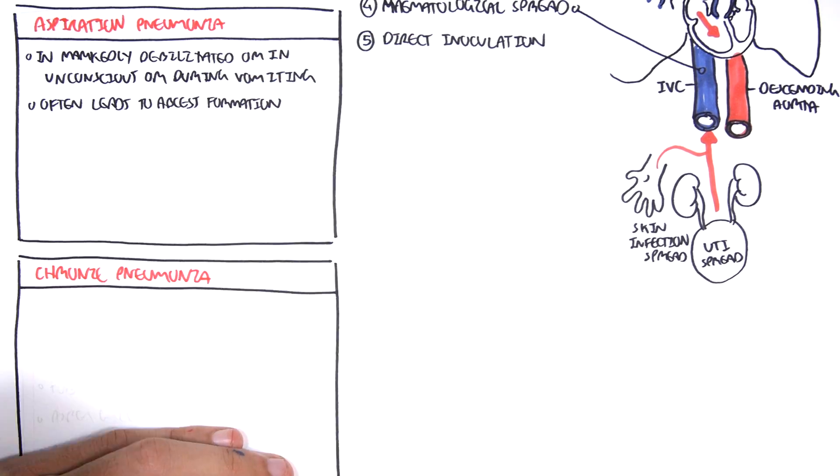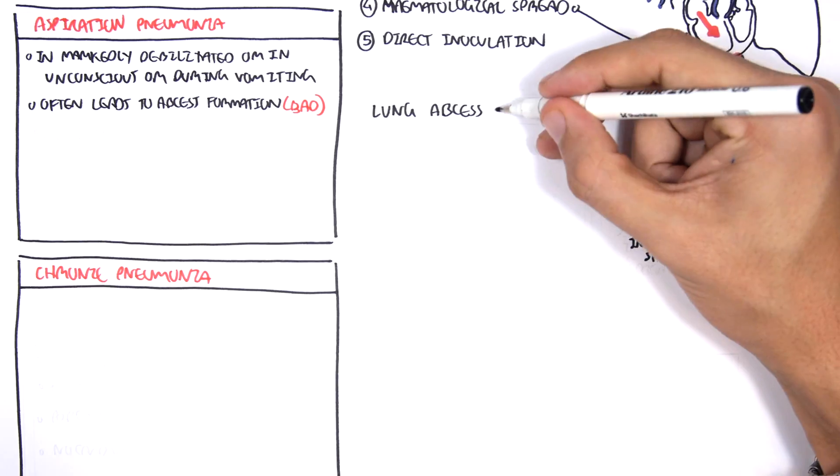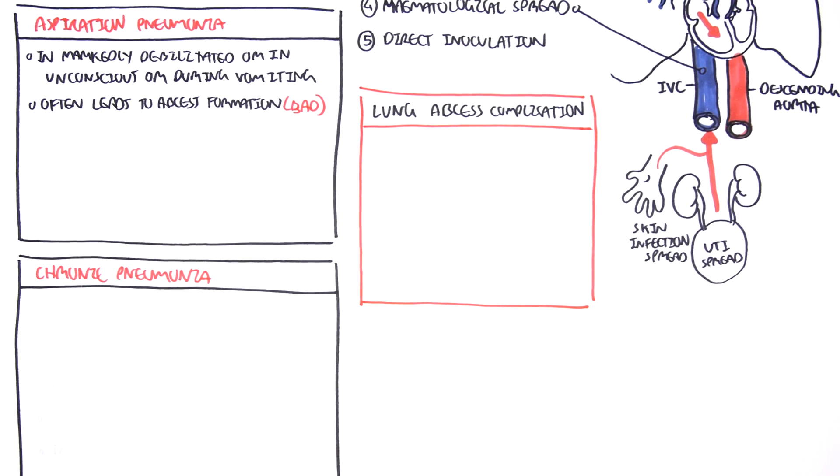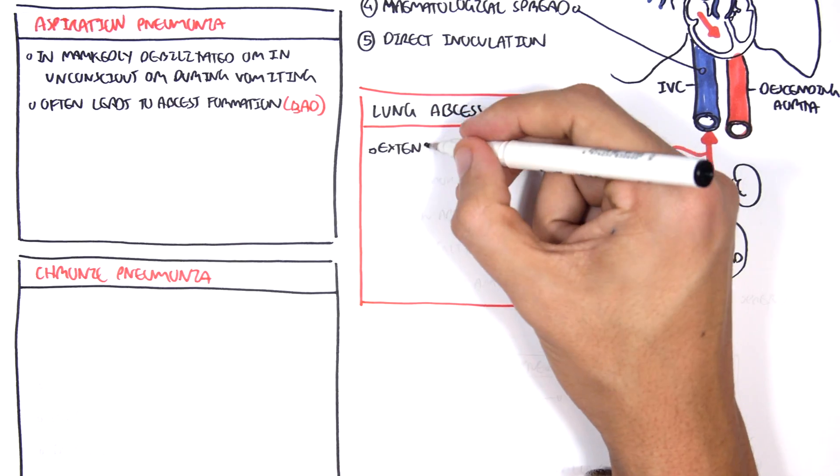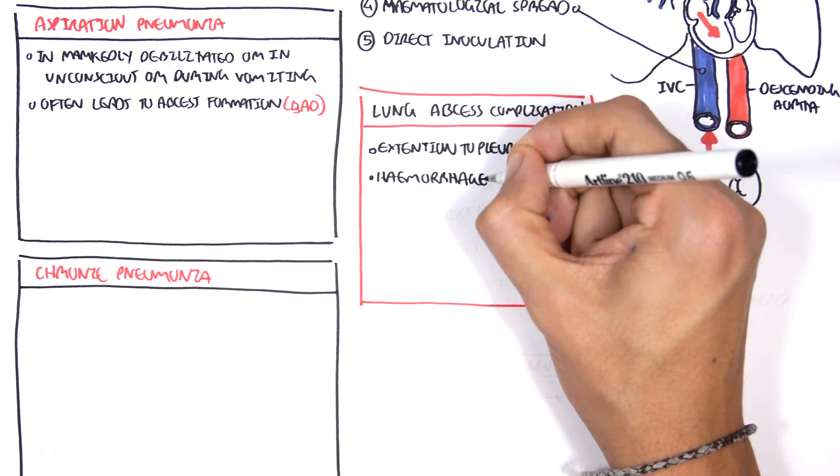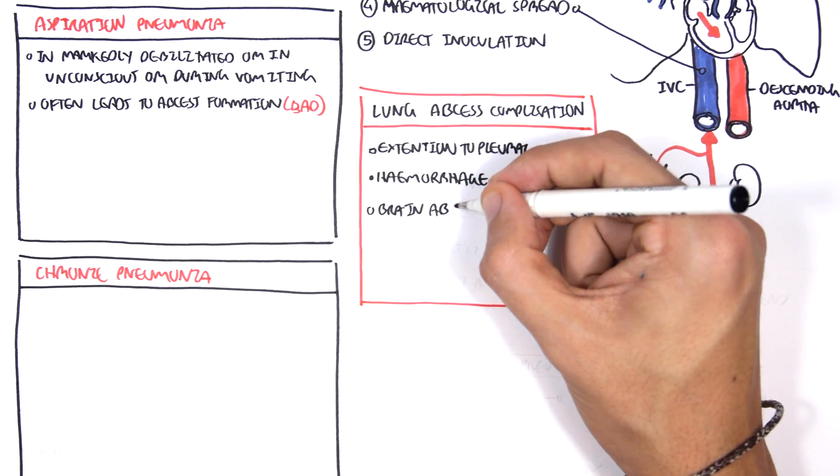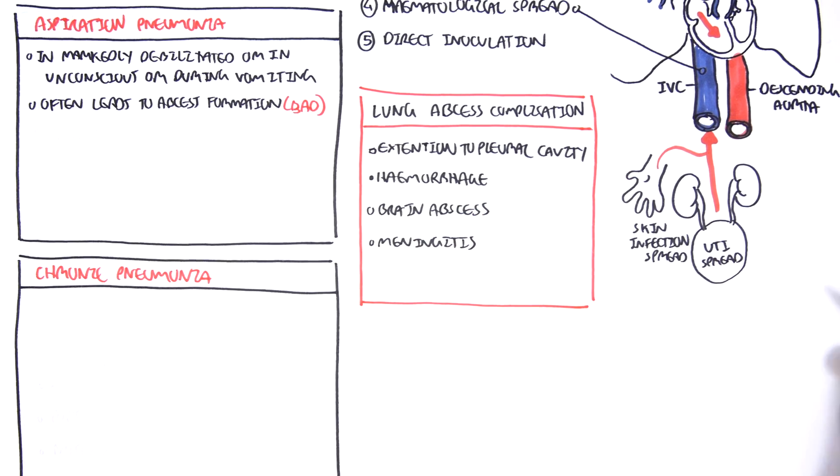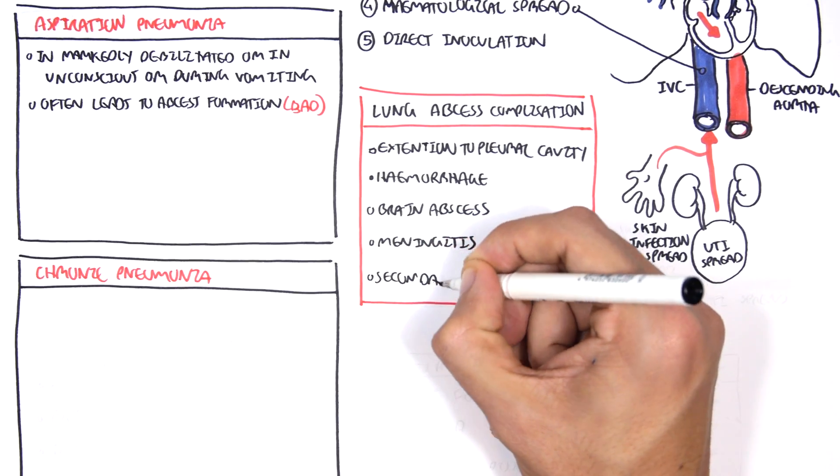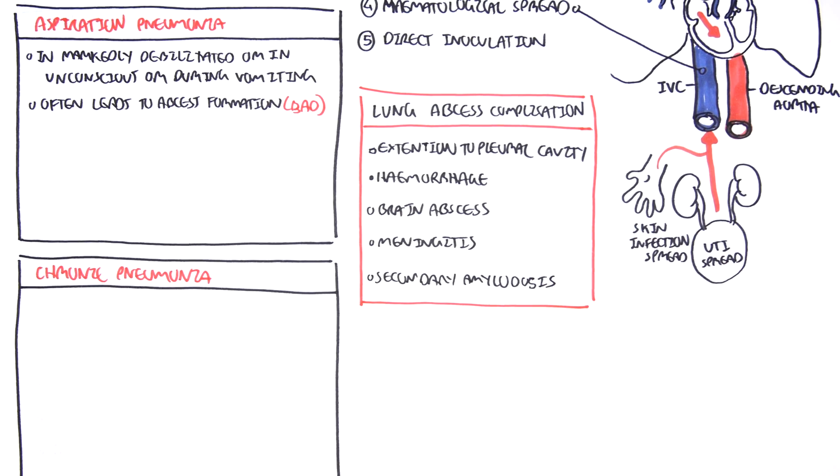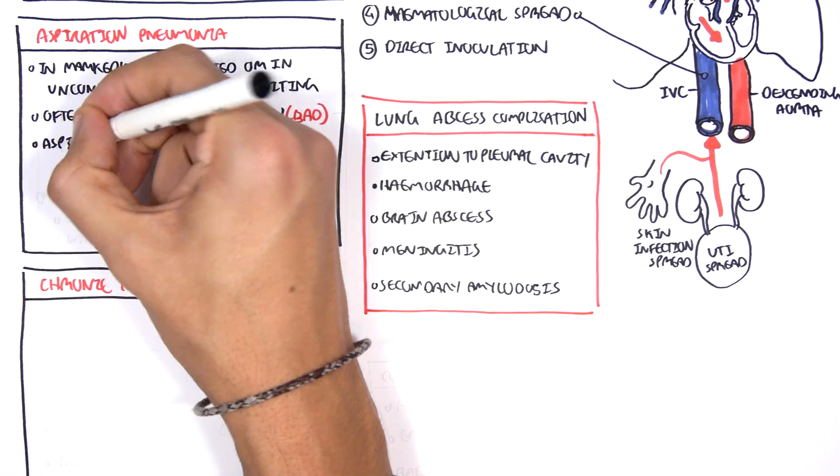Let us take a closer look at complications with abscess formation in the lungs. So lung abscess complications. So when you develop a lung abscess from aspiration pneumonia, there can be complications such as extension to the pleural cavity. You can have hemorrhage, you can develop brain abscess, meningitis, if it can travel through the blood to the brain. And you can also develop secondary amyloidosis.